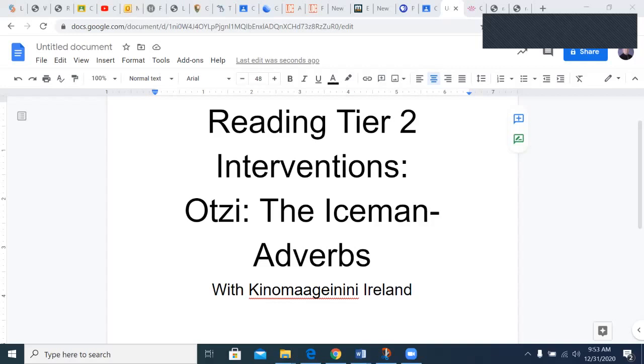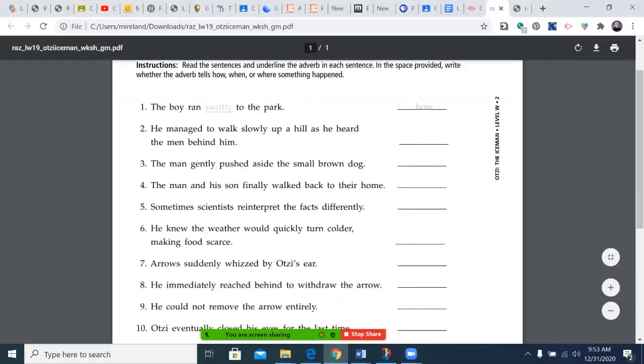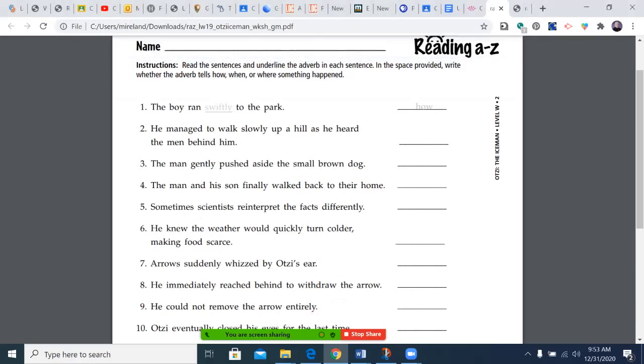Adverbs are words that give information to verbs. They tell how something was done, when something was done, or where something was done. The example here is 'the boy ran swiftly to the park.' How did he run? Swiftly, which is another word for fast. So we now know that it describes how.